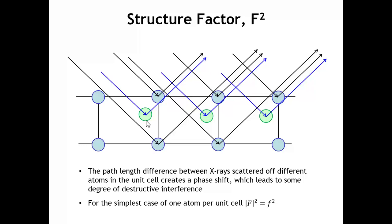This is a topic in and of itself, and in two lectures from now we're going to get into the structure factor in more detail. For now, we just know that it contains the information about the atoms in the unit cell. In the case of polonium, where we have only a single atom per unit cell, there are no interference effects to take into account, and so the structure factor just becomes the atomic form factor of polonium squared.